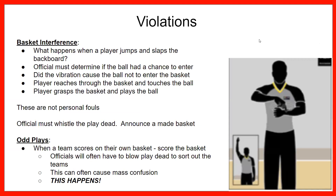Basket interference comes up with questions. When a player jumps and slaps the backboard — it happened last night — the ball went in and everyone's looking at you saying 'he can't do that.' As an official, you need to determine whether the vibration caused the ball not to enter the basket. If that ball has a good chance of going in and a person slaps the backboard, whistle it, call basket interference, and score the basket — it's not a foul. The team that just got scored on gets the ball.